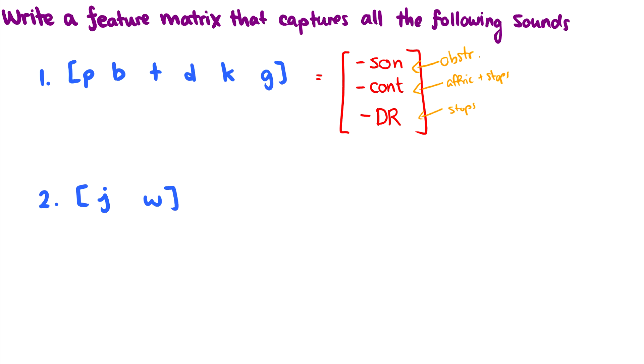The answer is no, I don't need three features. I could do this with two. I could do this with minus delayed release. Because if I have minus delayed release, I already have just the obstruents. And minus DR is going to make it just the stops. So this natural class can be found with just minus sonorant minus delayed release.